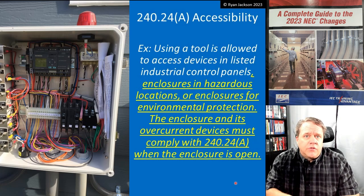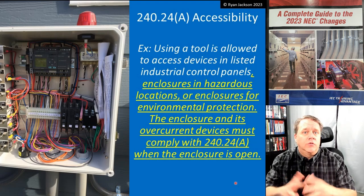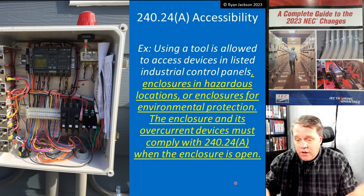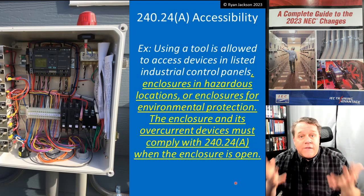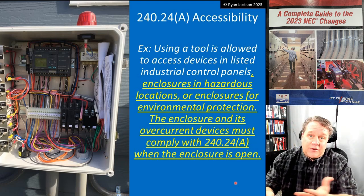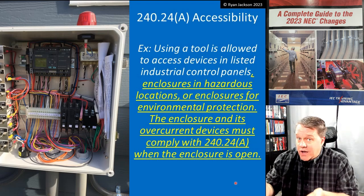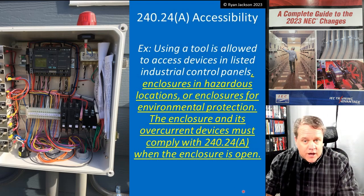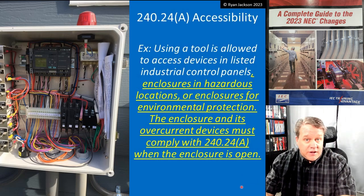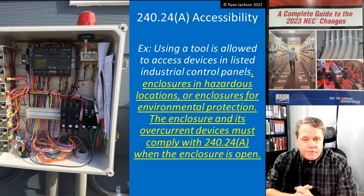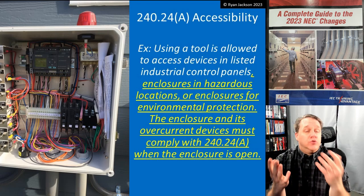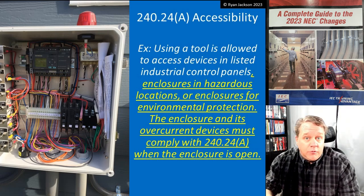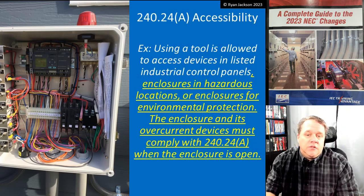Or enclosures for environmental protection — if you have a stainless steel enclosure or 3R enclosure designed for corrosion protection or hose-down protection, the circuit breaker isn't just right there; you might have to undo the cover with a screwdriver. Most inspectors were already viewing it that way, but that's not what the code said. So: using a tool is okay in listed industrial control panels, enclosures in hazardous locations, or enclosures for environmental protection. The enclosure and its overcurrent devices must comply with 240.24(A) when the enclosure is open — opening it with a tool is perfectly fine.